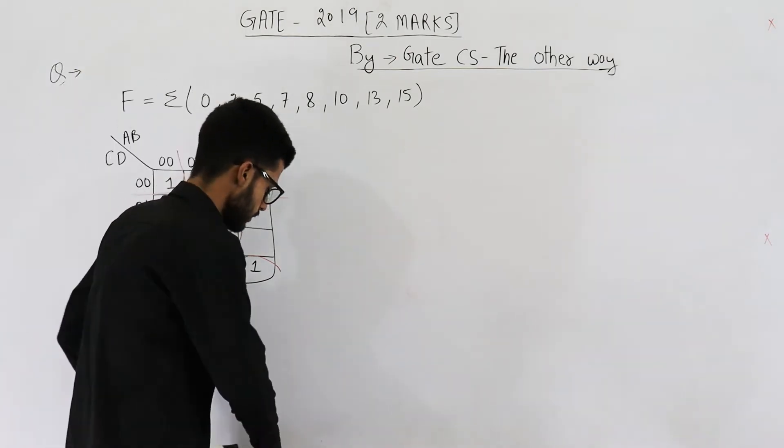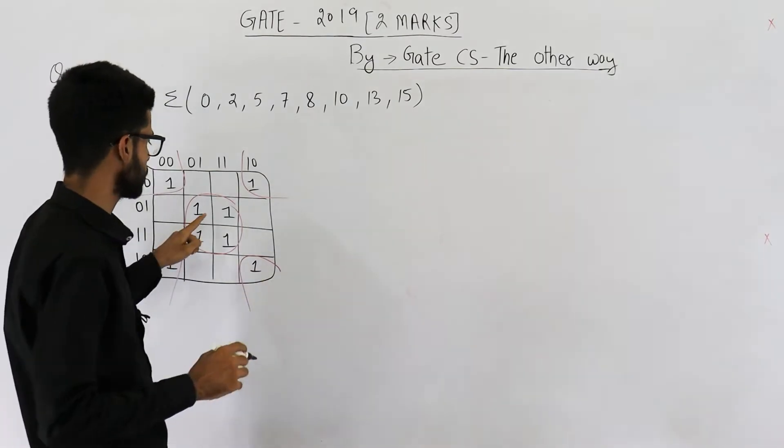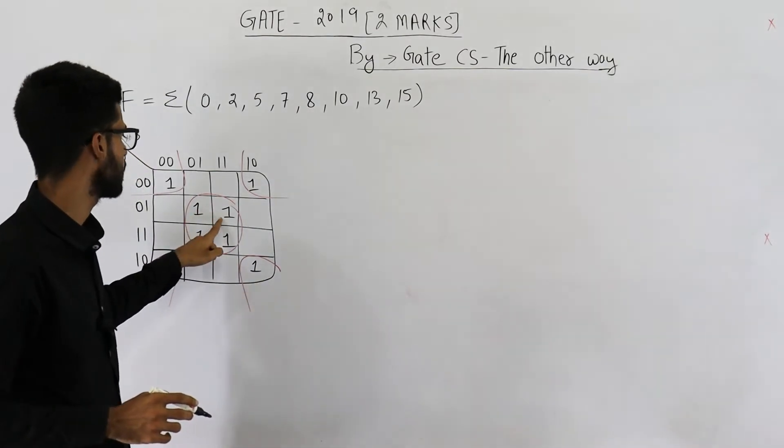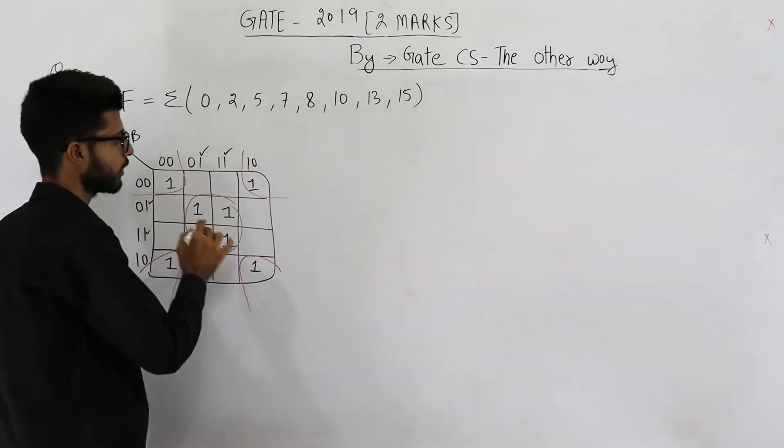Let's find out the minimal SOP for this group, for this prime implicant. It will be BD.